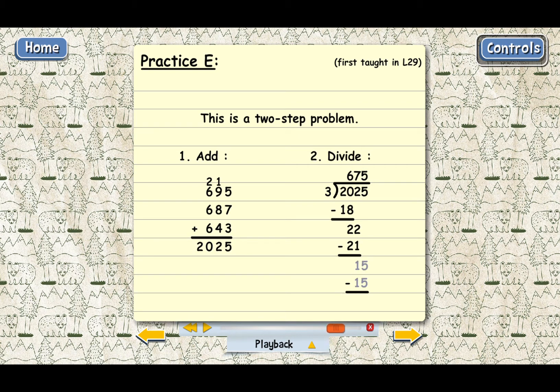and 15 minus 15 is 0. We have no more digits to bring down, so that means that we're going to end up with 675 on top of the division box, and that means the answer to practice E is going to be 675 miles.